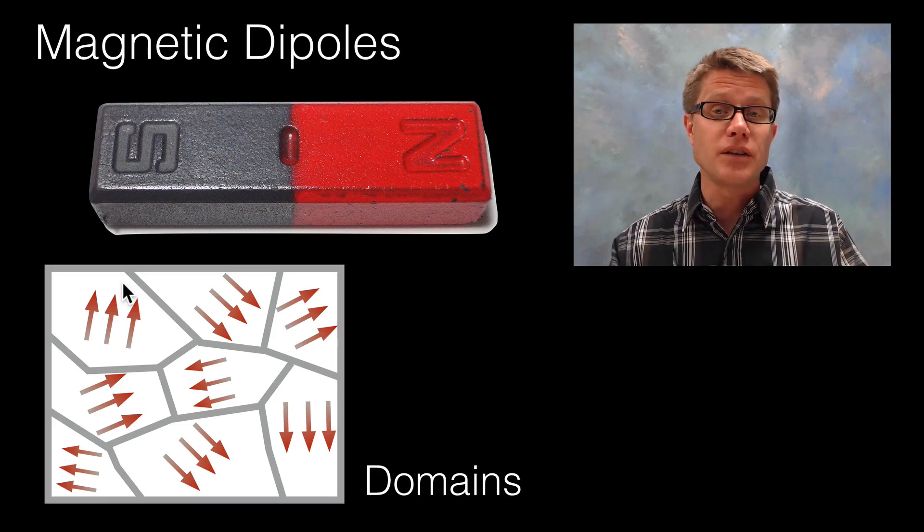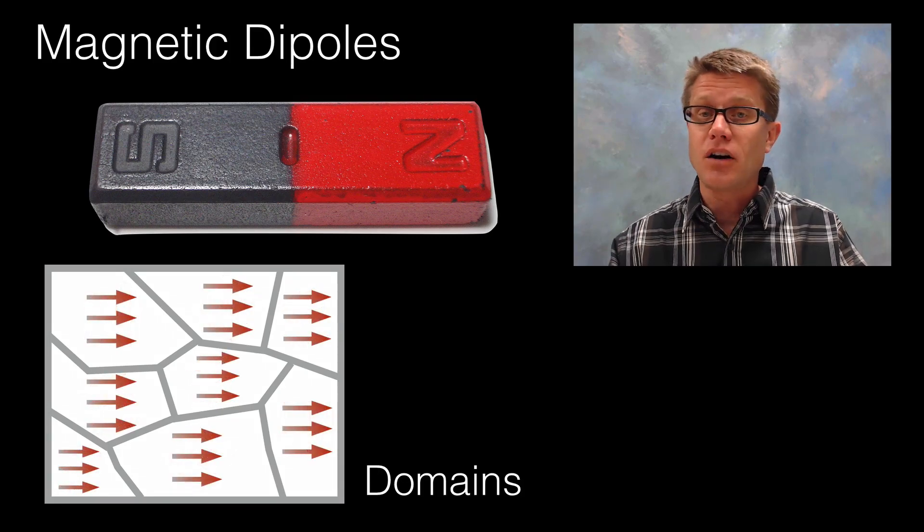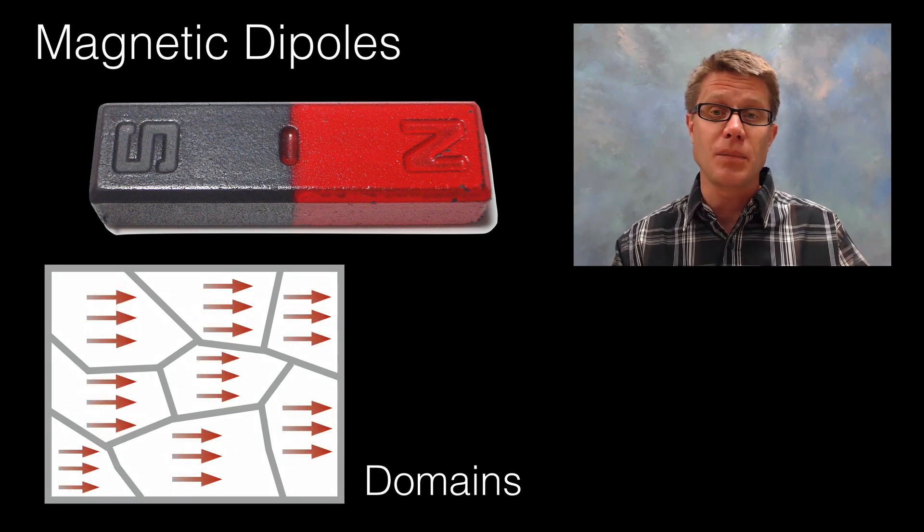If I were to change this and make it a permanent magnet, watch what happens to those domains. They all essentially line up. And so it is the domains that must be causing the magnetism.